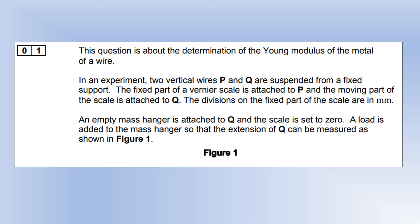We're going to take a look at the AQA June 2016 Paper 2. The first question is all about determining Young's modulus of a wire. We've got two vertical wires from a fixed support and we're using a vernier scale to measure extension, and the divisions are all in millimeters.